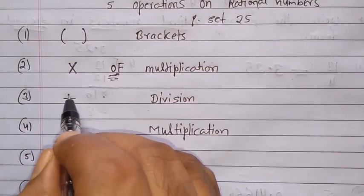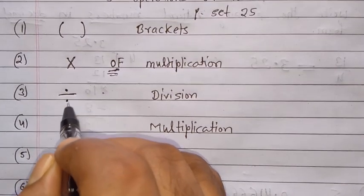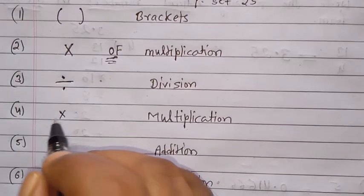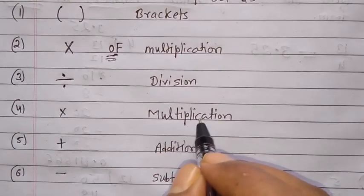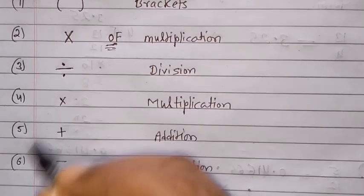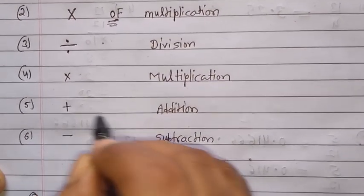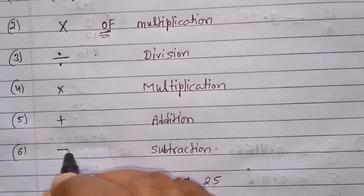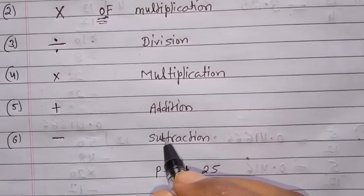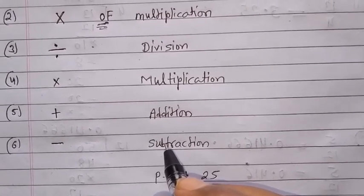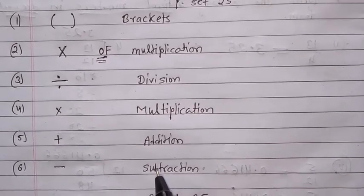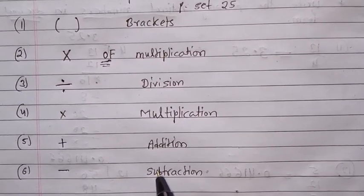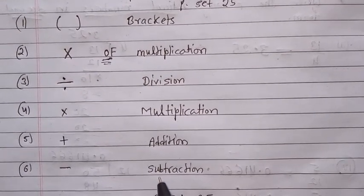Third step: after 'of', we solve the division sign — whatever division sign is there, we do that first. Next, we solve the multiplication sign. After multiplication, if addition is there, we do addition. The sixth step is subtraction — we do that last. So the order is: Brackets, Of, Division, Multiplication, Addition, Subtraction.